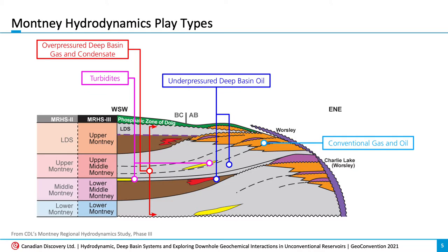As I'm sure most of you know, the Motney is as prolific as it is complex, but for the purposes of today, we will just quickly go over basic Motney stratigraphy and the main hydrodynamic plate types. The Motney can be split into four zones: the lower, the lower-middle, the upper-middle, and the upper, and all four zones can be targets for hydrocarbons depending on where you are in the Motney.